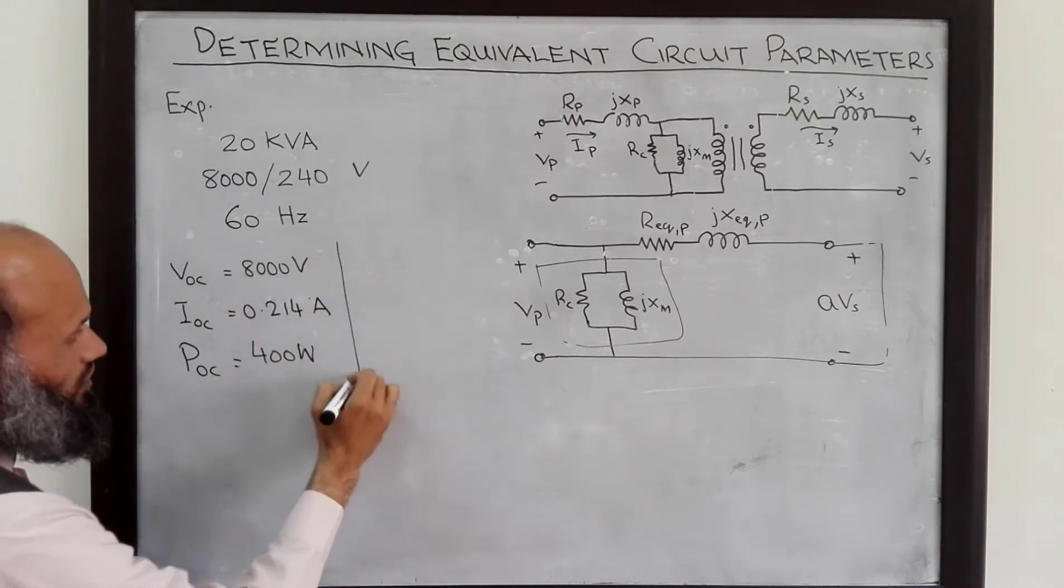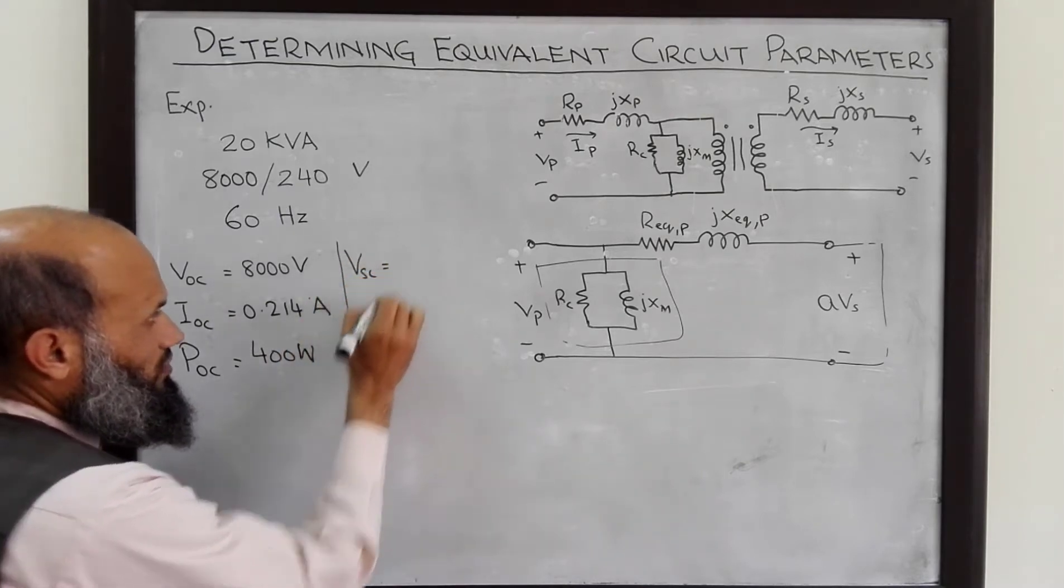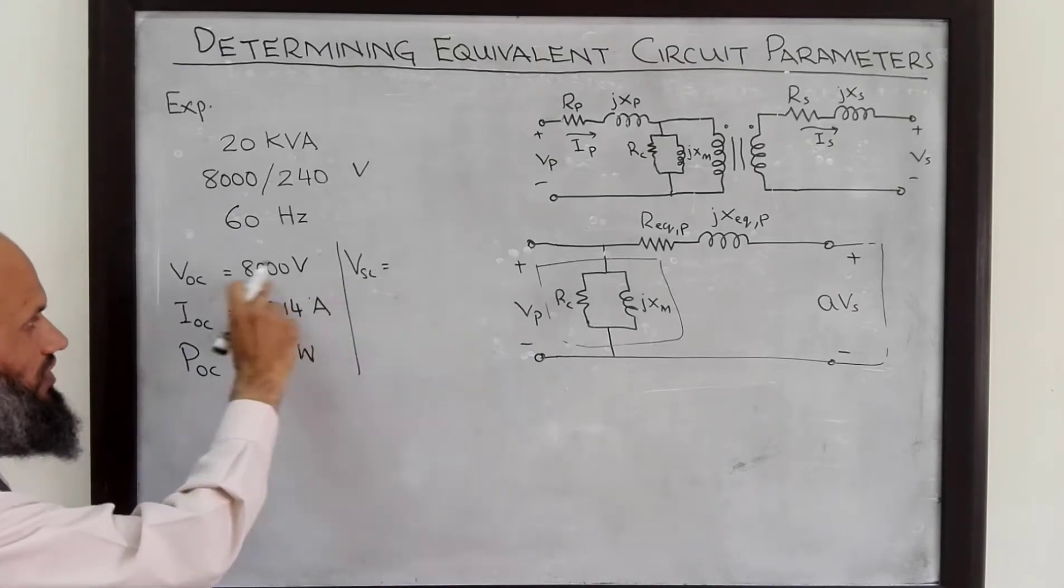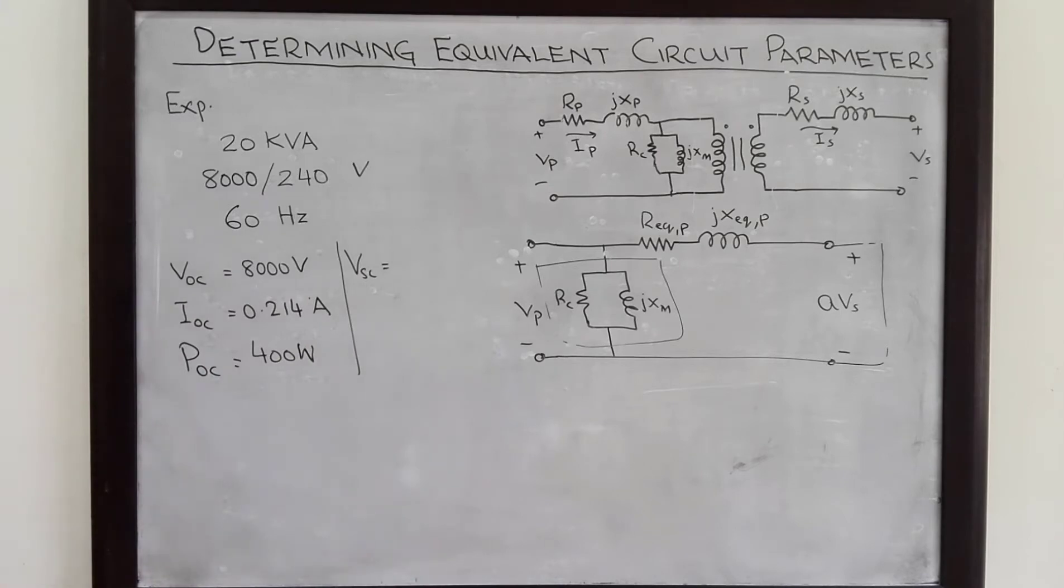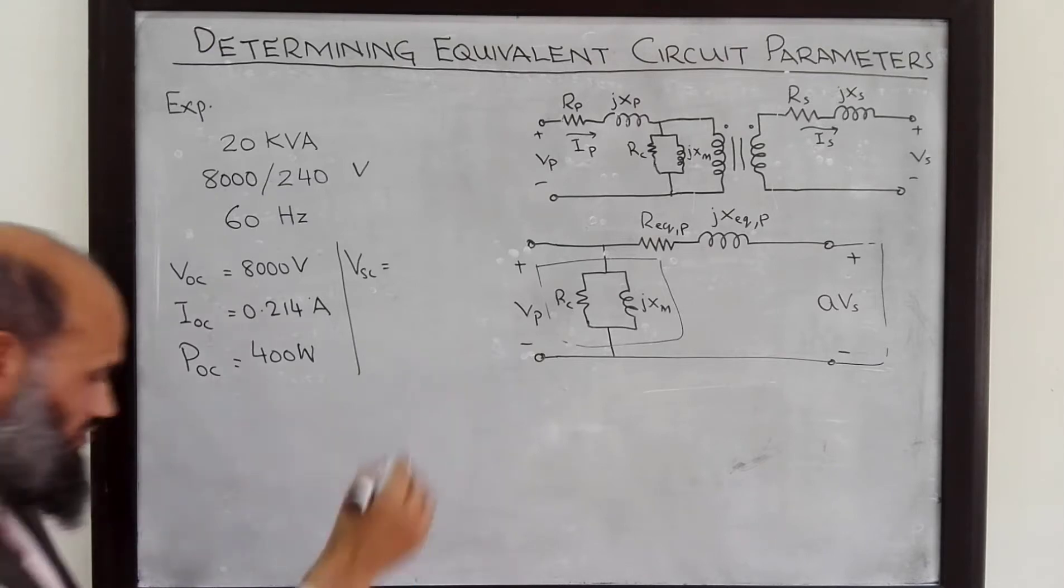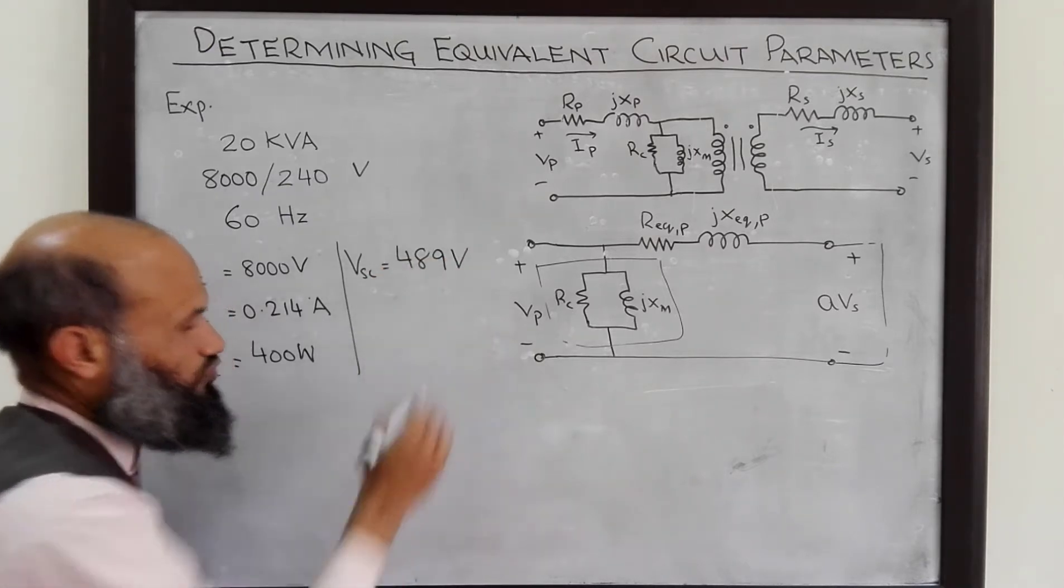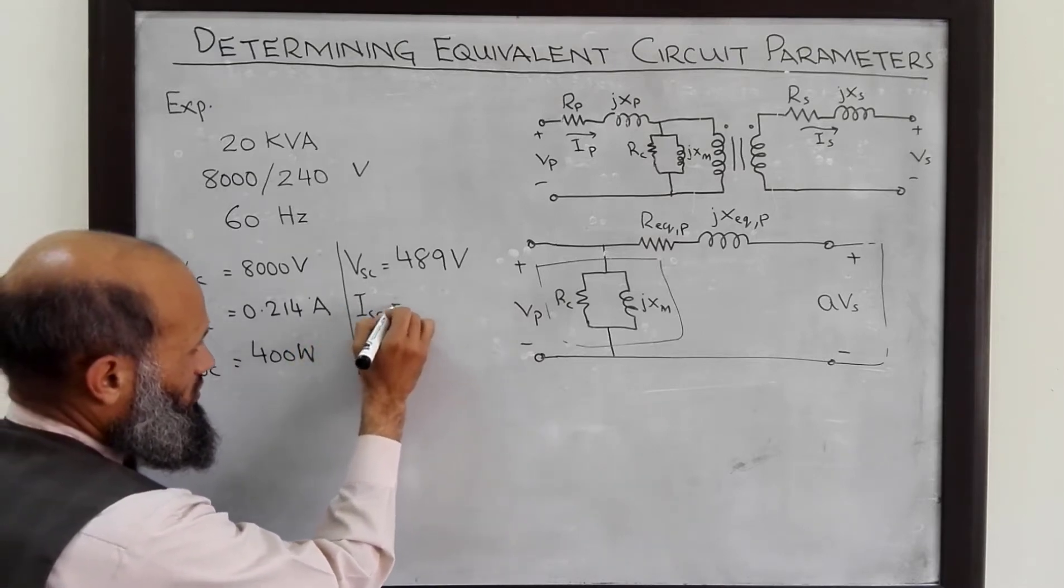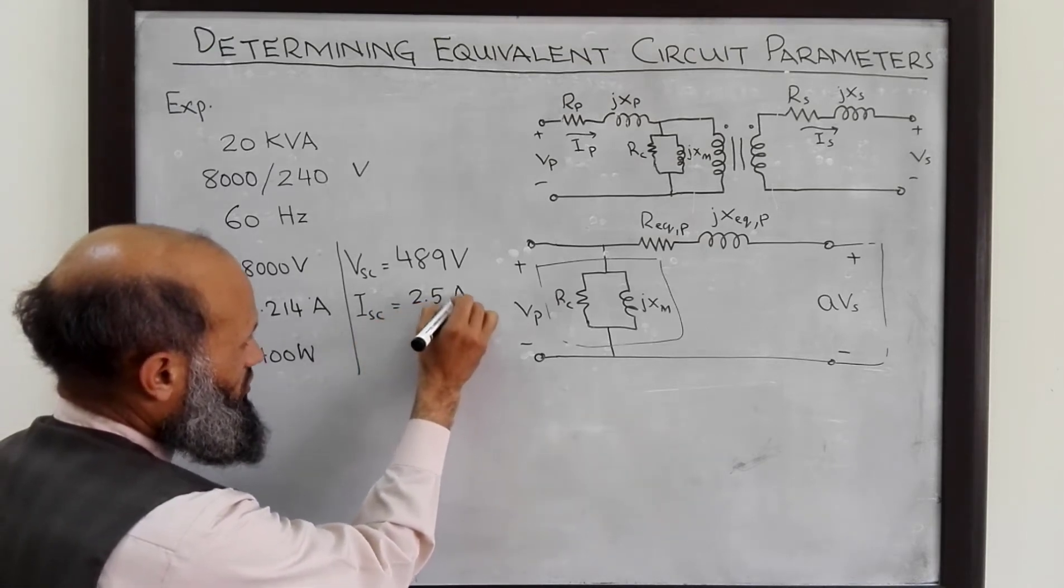Similarly, we perform the short circuit test and the short circuit voltage. To perform the short circuit test, we do not apply the rated voltage. Rather, we apply a small voltage such that the rated current flows in the transformer. So, the voltage which is applied to this transformer is 489 volts. And the current that flows in the short circuit test is the rated current, 2.5 ampere.